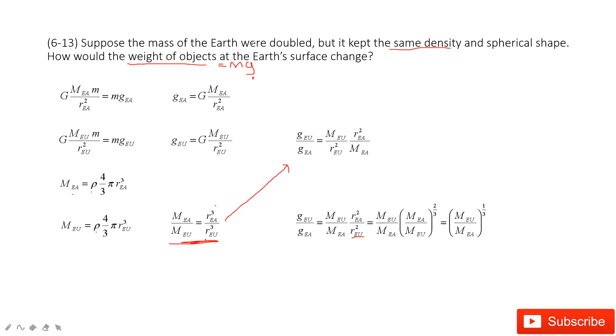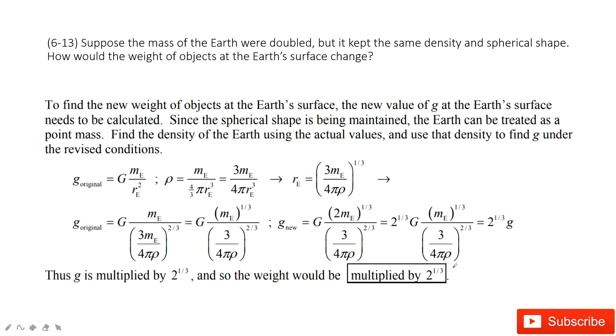And then we know the Earth's mass is doubled. So this one is 1, this one is 2. Now we get the ratio from the acceleration due to gravity, gEu to gEa. Then you can see this is how we do that. And then you find, so the weight would be multiplied by 2 to the 1/3. Thank you.